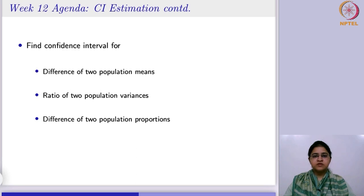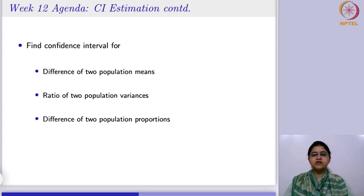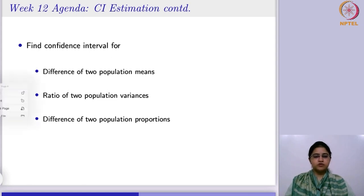Last week we saw confidence intervals for single sample problems — a single mean, single variance, or a single proportion — where you have one population and draw a sample to find confidence interval estimates. However, in real life you may come across two populations, and we need to find confidence interval estimates for the difference of two means, ratio of two population variances, or the difference of proportions. In addition, we are going to learn about bootstrap confidence intervals.